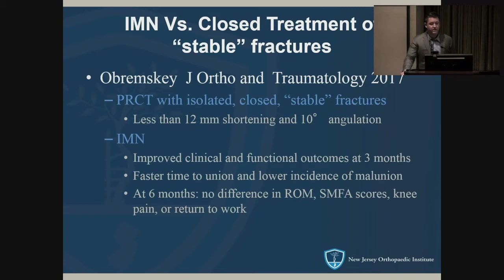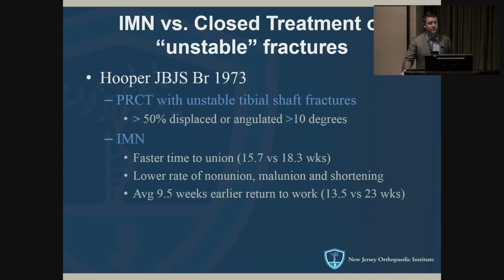A JOG study in 2017 compared IM nailing versus non-operative management. They found IM nailing had clinically improved outcomes at three months and faster time to union, but at six months there was no significant difference. An older study on unstable tibia shaft fractures found that IM nailing had a significantly lower rate of nonunion, malunion, and shortening — which makes sense, since an unstable fracture is not going to be amenable to closed management.